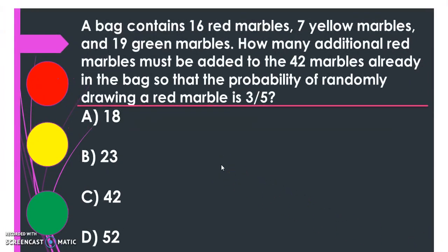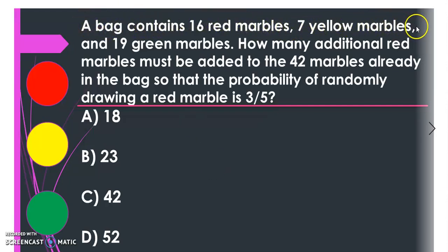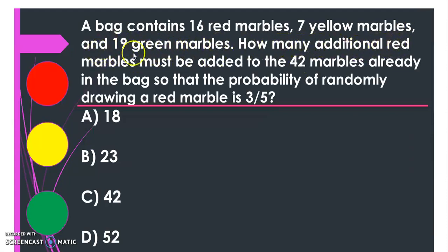Welcome back. Today we will discuss an ACT math question. The link to this question is given in the description. The question is: a bag contains 16 red marbles, 7 yellow marbles, and 19 green marbles. How many additional red marbles must be added to the 42 marbles already in the bag so that the probability of randomly drawing a red marble is 3/5? You can use a calculator if you need to.